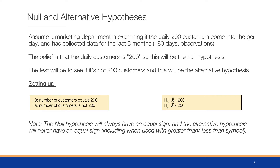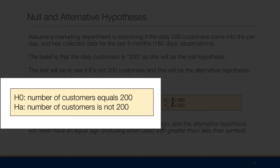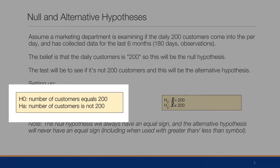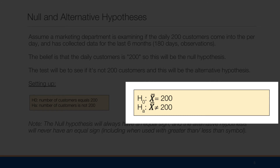Assume a marketing department is examining whether the daily number of customers coming into a store is 200, and has collected data for the last six months — about 180 days of observations. The belief that daily customers equals 200 is the null hypothesis. The test will be to see if the sample average is not 200, which is the alternative hypothesis. So we set this up as: H₀: x̄ = 200, and Hₐ: x̄ ≠ 200.